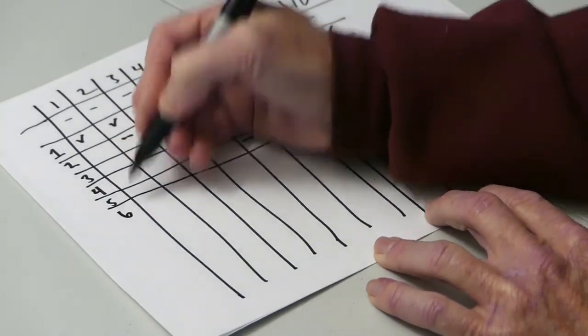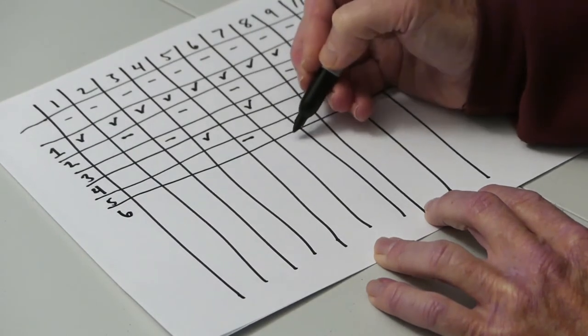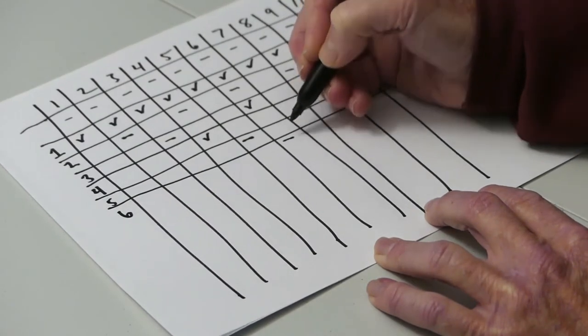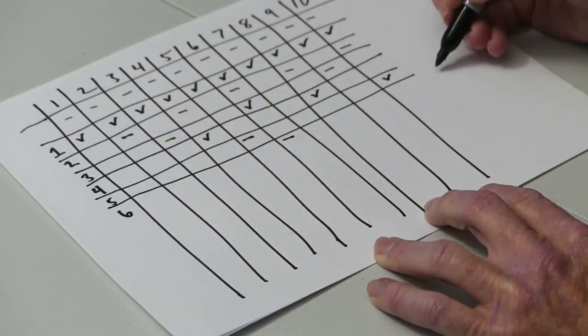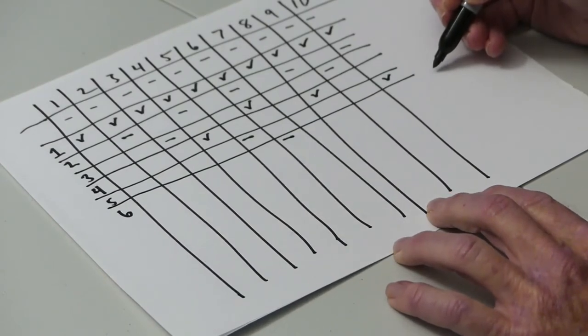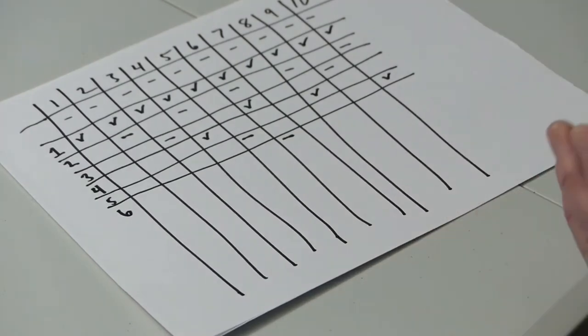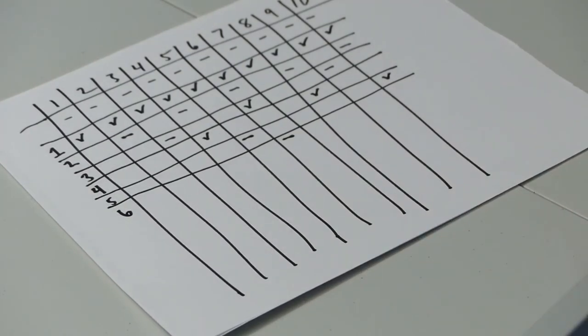Student 6 starts at locker 6 and closes it. Every 6th locker would be locker 12, which is beyond our limit of 10, and student 6 is finished. If we had 100 lockers, they would go on to lockers 12, 18, 24, and so on.